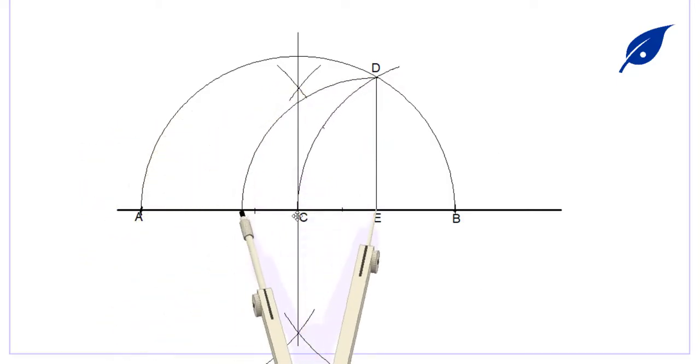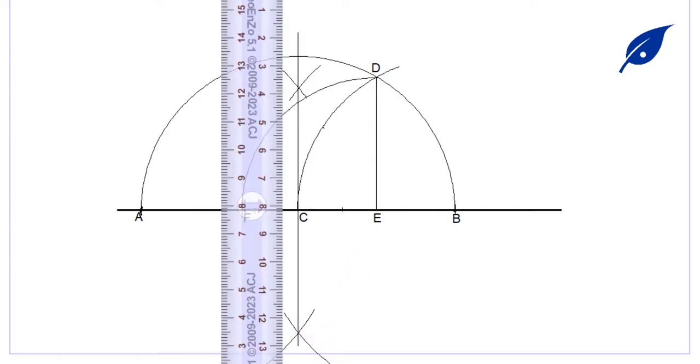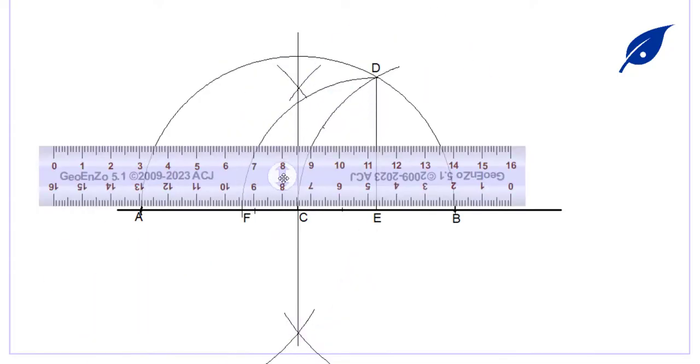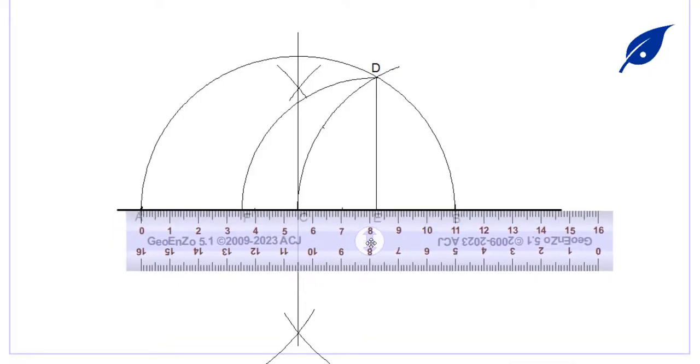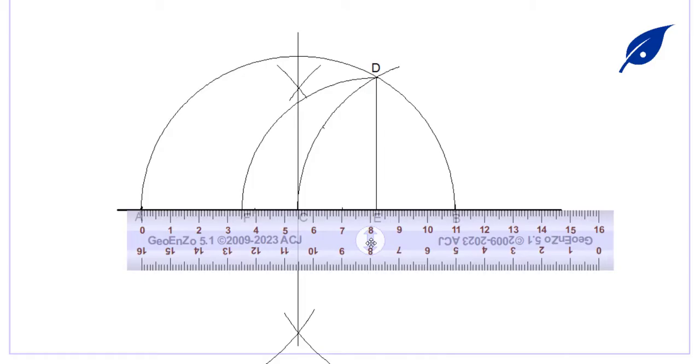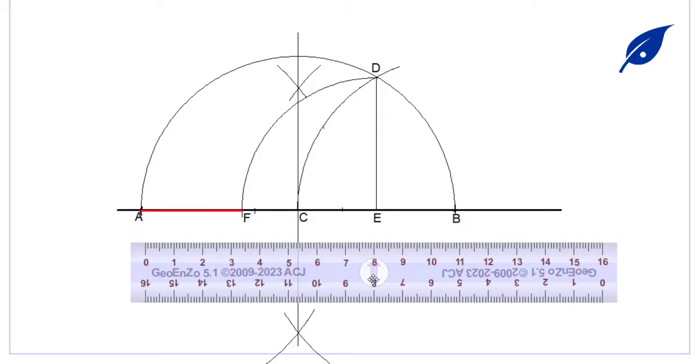On the line AC, we'll get the new point F. Now AF will be the diameter of our circle. Hope you understand this simple process. For construction, we have the measurement 35 millimeters.